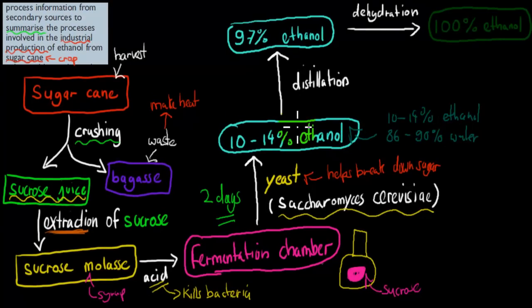Now what happens next is we go through distillation. Distillation helps us to purify. So distillation is to purify. And what I mean by that is it helps us to remove that water. Now after distillation, we go from 10 to 14% ethanol to 97% ethanol, which means we only have about 3% water left. So we've removed most of the water. But to go from 97 to 100% ethanol, we still have to do some more water removal to get that last 3%. And we do that through dehydration. So dehydration makes that 100% ethanol.